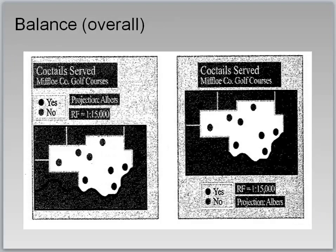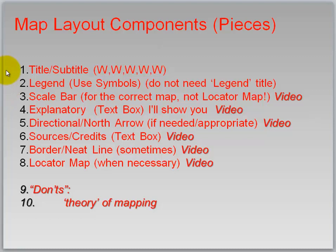Comparing overall balance between two maps: the map on the right catches your eye more. The legend should not be huge and definitely shouldn't be placed in the upper area, which is the center of focus — the upper two-thirds. On the better map, the legend is positioned down below, which is much more ideal. Map layout components include: a title and subtitle telling who, what, where, why, and when; a legend using symbols and colors — you do not need the word 'legend' as a heading, we know it's a legend.